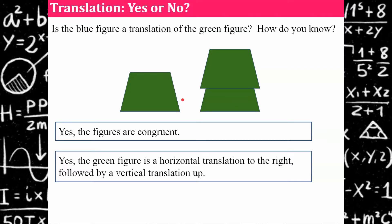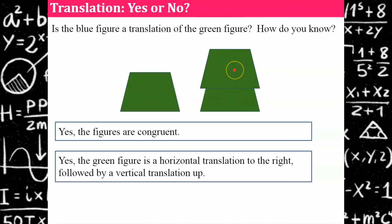Even though you could go there diagonally, you can't refer to that mathematically. We're going to say to the right and up because that's how we plot an ordered pair in the coordinate plane.